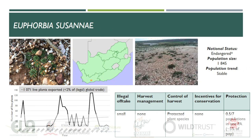Euphorbia susani is endemic to the western Little Karoo in the Western Cape Province, where it is threatened primarily by habitat degradation due to overgrazing and trampling. It is currently assigned a status of endangered with a population estimated to number around 1,845 individuals. While the population is deemed to be stable at present, the species could qualify for uplisting into critically endangered if the two edge-of-range populations are lost. Around a thousand plants of the species have been exported from the country over the years, accounting for less than two percent of the global trade, meaning South Africa is not the primary supplier of the species in the international market.